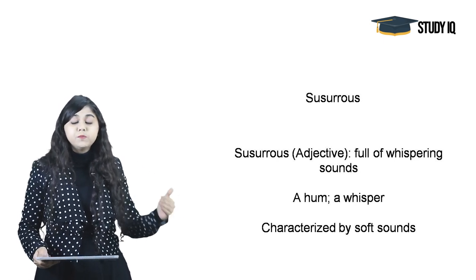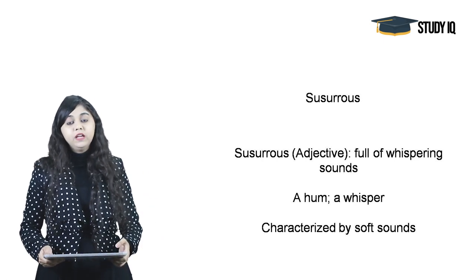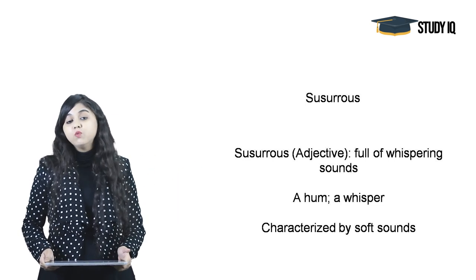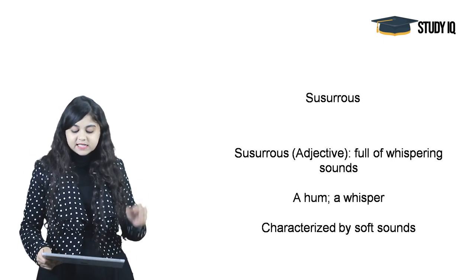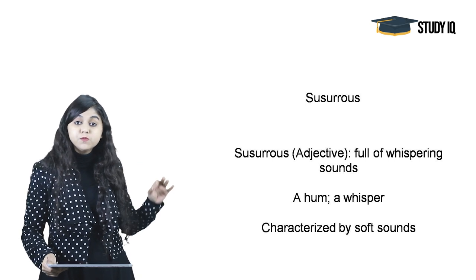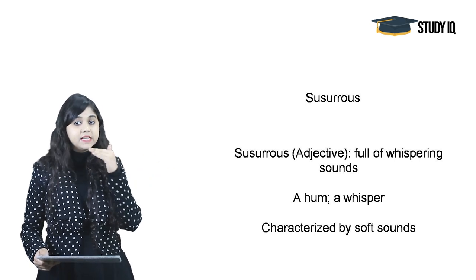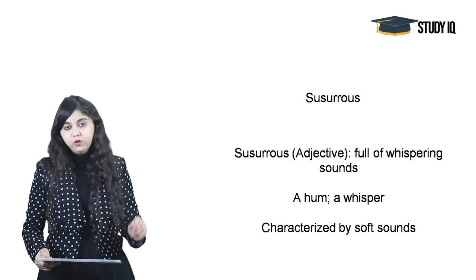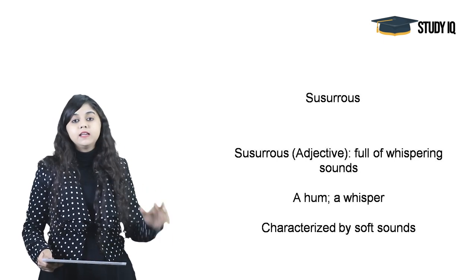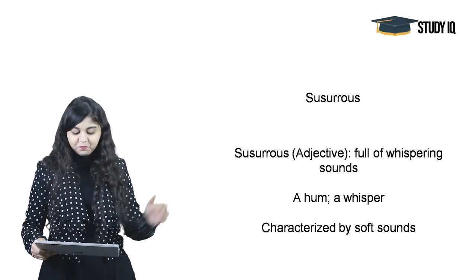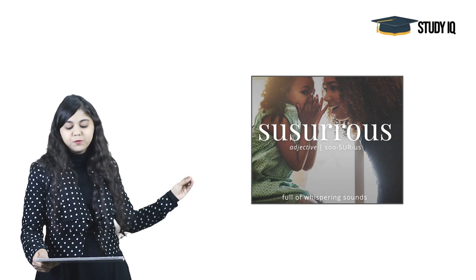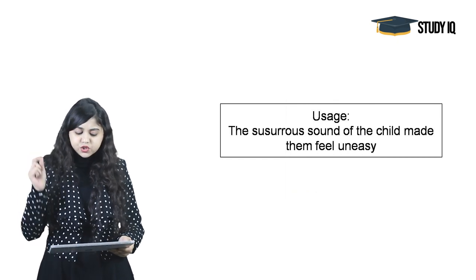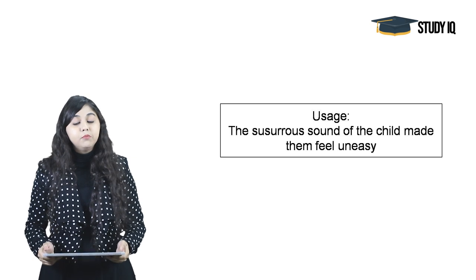Moving on to the next word: Susurrous. Susurrous ka arth hota hai whisper karna — jab aap dhire se bol rahe hain kisi ke kaanon mein, ya fir dhire se hawa chal rahi hai. This adjective means 'full of whispering sounds' — characterized by soft sounds. Usage: 'The susurrous sound of the child made them feel uneasy.'